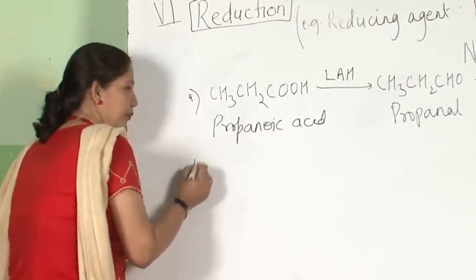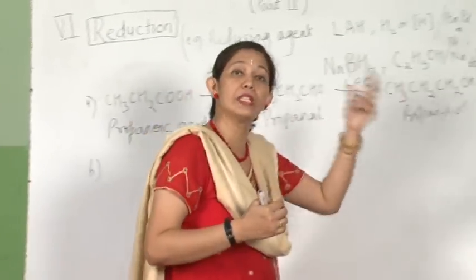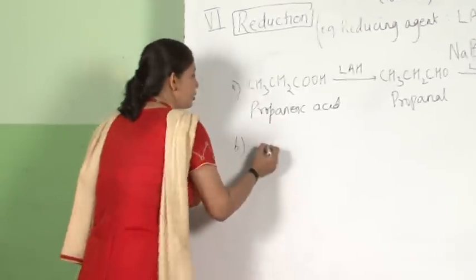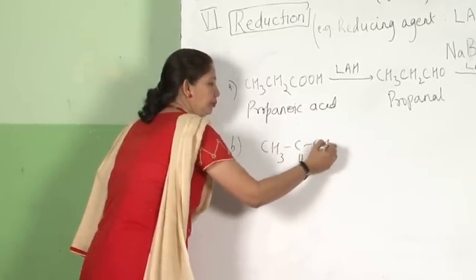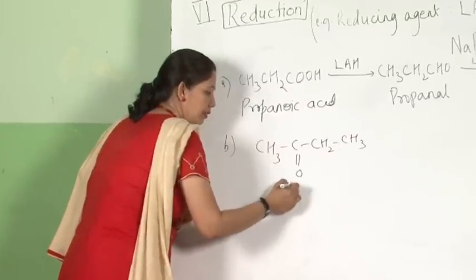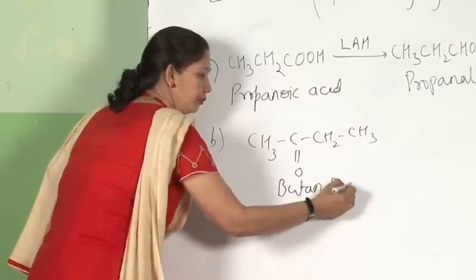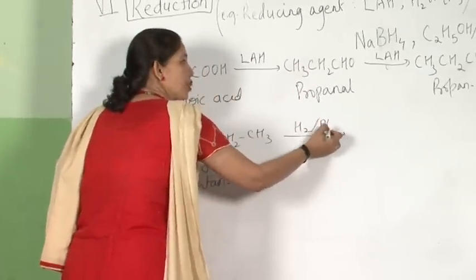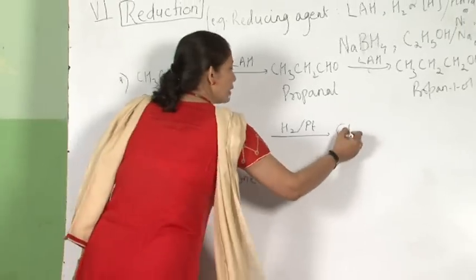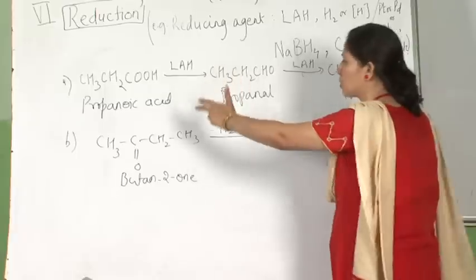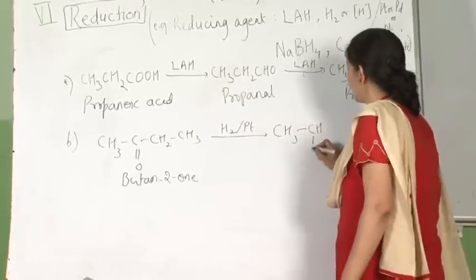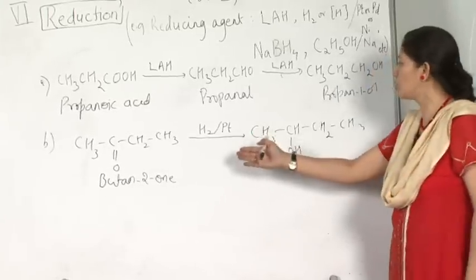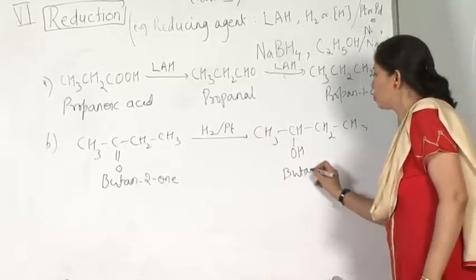Taking another example: a secondary alcohol on oxidation gives a ketone; reverse that — a ketone on reduction gives a secondary alcohol. I am writing a ketone, butan-2-one, and this undergoes reduction with molecular hydrogen in presence of platinum. Wherever the ketone part is, that part turns out to be OH — a secondary alcohol — giving butan-2-ol. So butan-2-one turns out to be butan-2-ol. Reduction means removal of oxygen and addition of hydrogen.